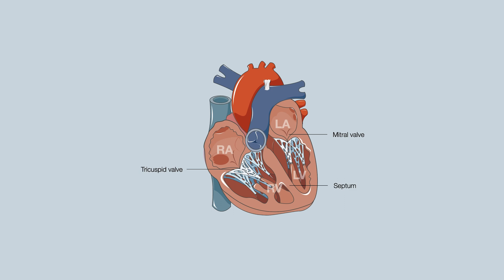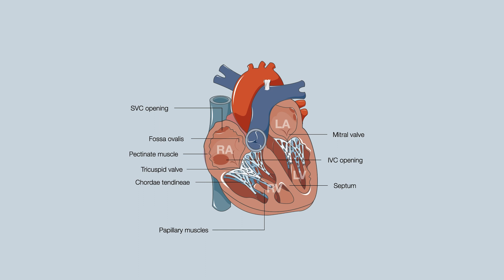Separating the chambers is a septum. In the right atrium, you'll observe the openings for the superior and inferior vena cava and the fossa ovalis, which is where the foramen ovale once was, enclosed after birth. The atrium wall is lined by pectinate muscle, which has a tooth-combed appearance due to horizontal muscle ridges. Separating the right atrium and ventricle is the tricuspid valve, which has three cusps. These cusps are attached to the papillary muscles via the chordae tendineae. The papillary muscles ensure the valves remain closed during systole to prevent backflow of blood into the atria during ventricular contraction.